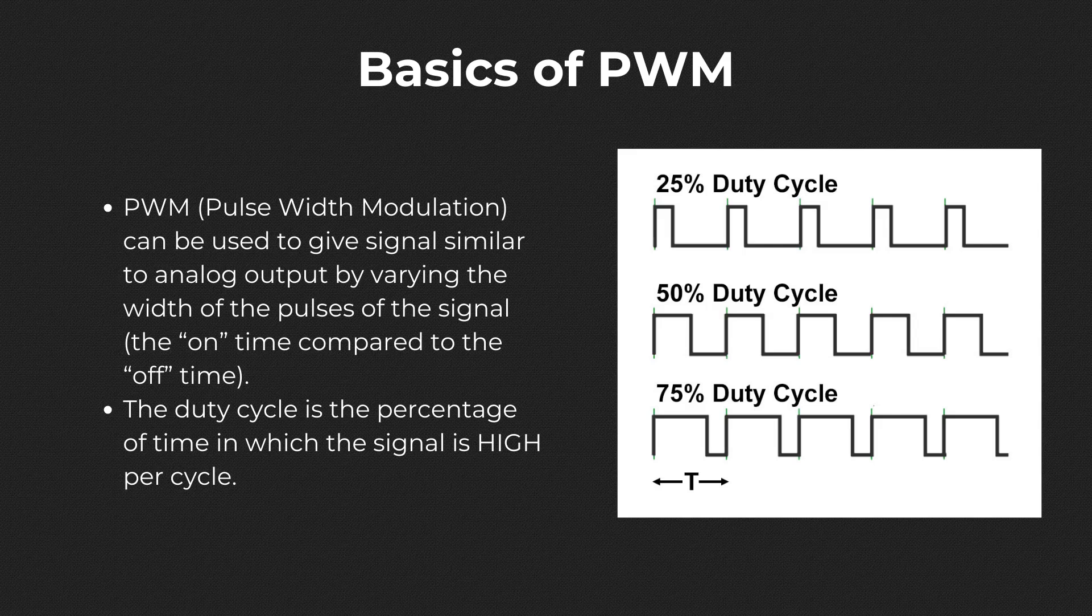PWM is a technique to get analog results with digital means. It creates a square wave where the signal switches between on and off periodically. This on-off pattern is controlled by changing the amount of time that the signal is high as opposed to low. The percentage of the on-time per cycle is called the duty cycle, varied from zero to 100 percent. Changing or modulating that pulse width or duty cycle is the key behind this technique, hence the abbreviated name PWM, pulse width modulation.